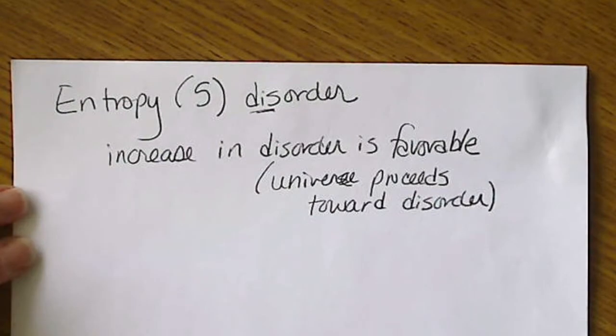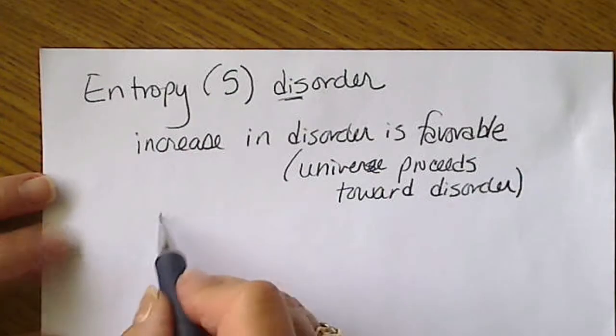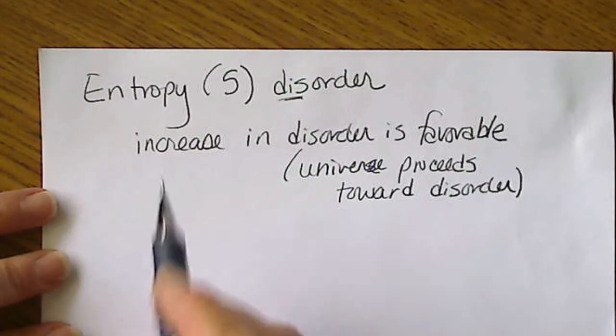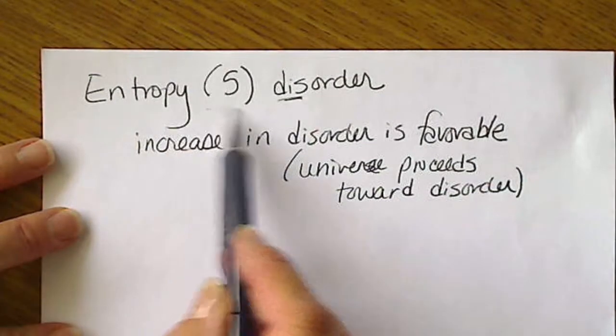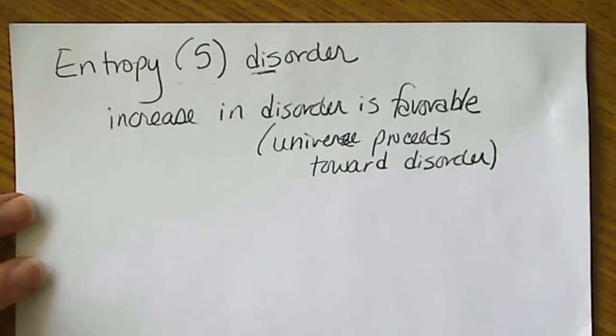This universe proceeds toward disorder. So all you've got to do to verify that is look at your sock drawer, look at your kitchen, look at your closet. It's natural for a state to go from order to disorder.